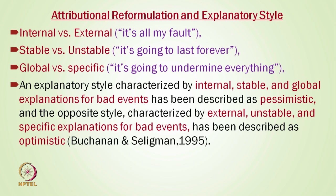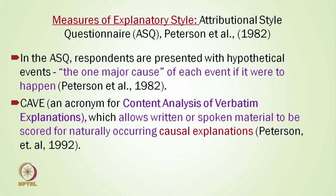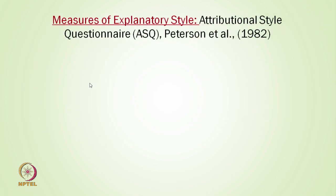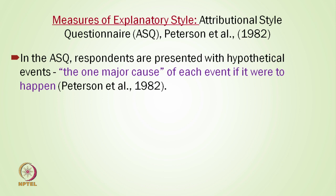An explanatory style characterized by internal, stable, and global explanations for bad events has been described as pessimism. The opposite style — external, unstable, and specific explanations for bad events — has been described as optimism. For assessing this, the Attributional Style Questionnaire (ASQ) was developed by Peterson and associates in 1982. In the ASQ, respondents are presented with hypothetical events and asked to identify one major cause for each event, then rated on internal/external, stable/unstable, and global/specific dimensions.